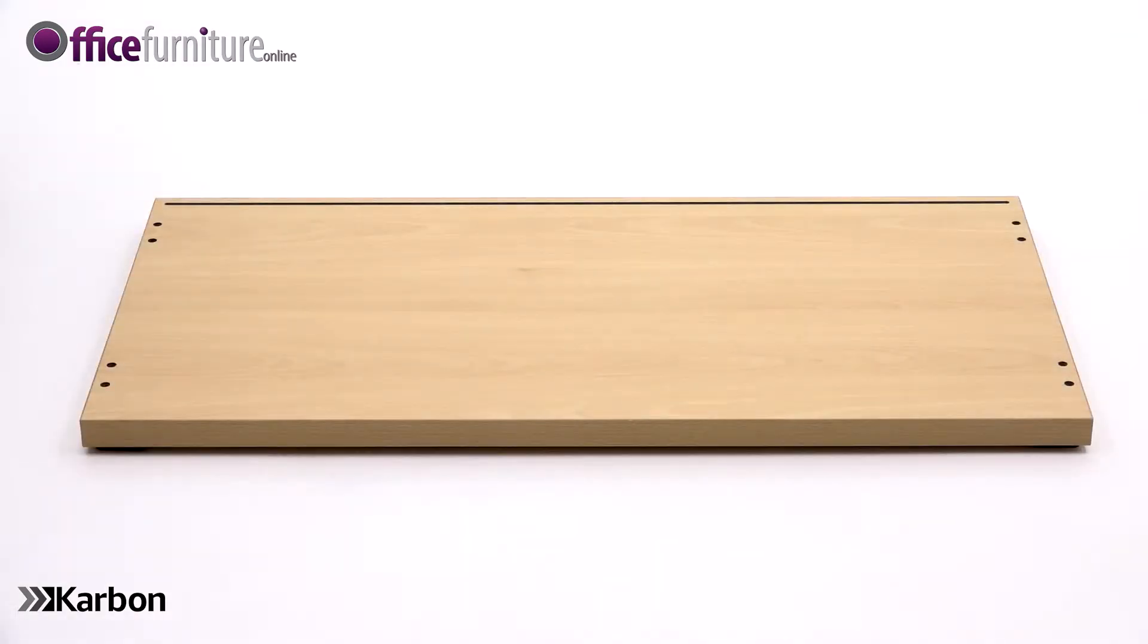To start, take the base panel and lie it on the floor with the holes facing upwards. Insert four dowels into the inner holes of the panel as shown.